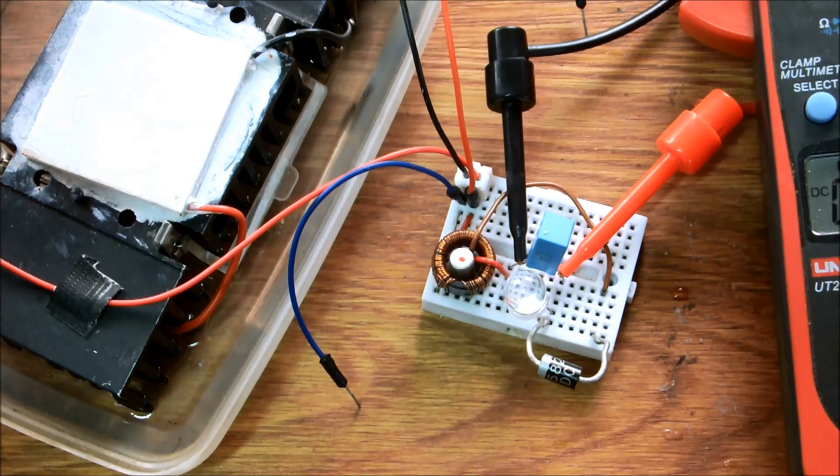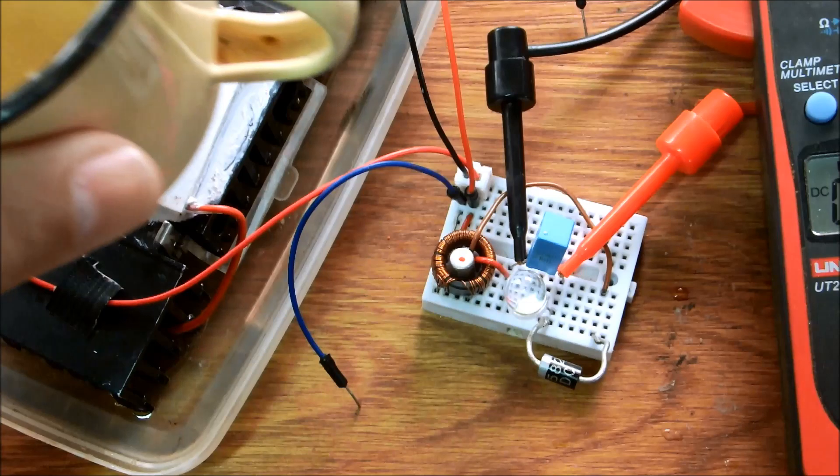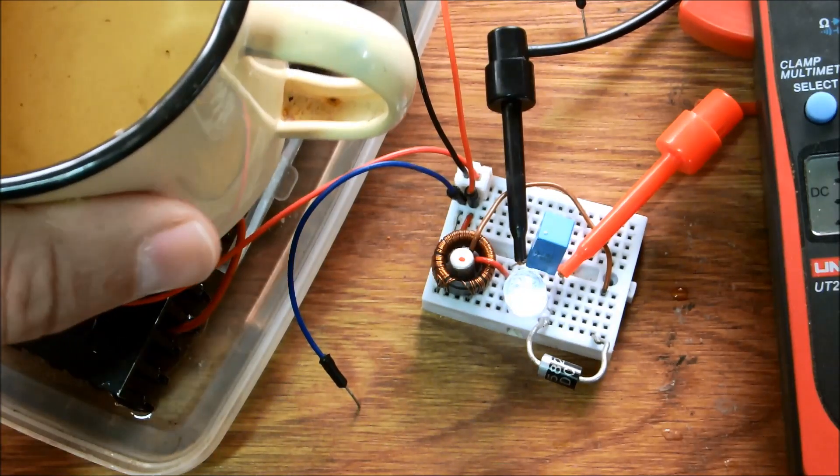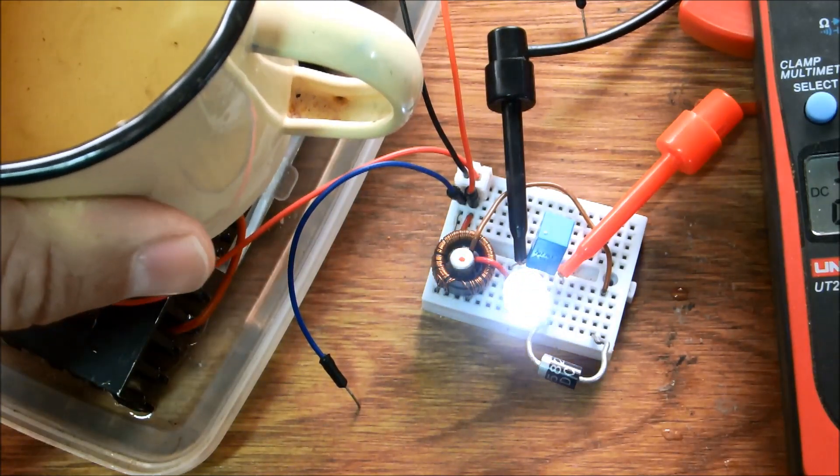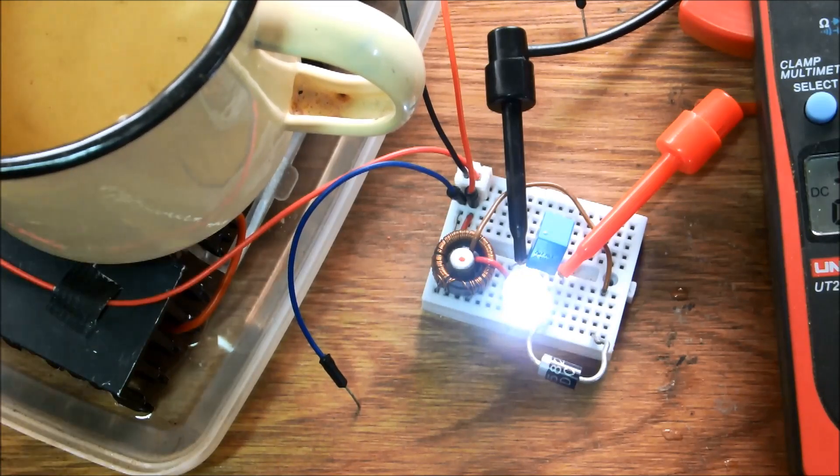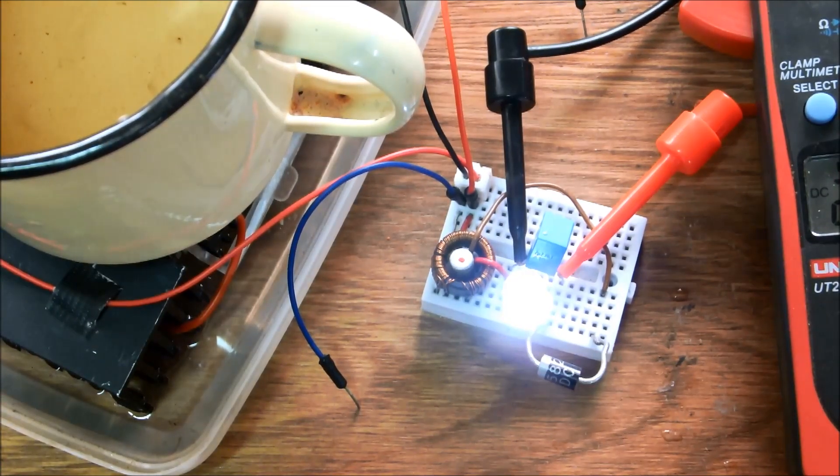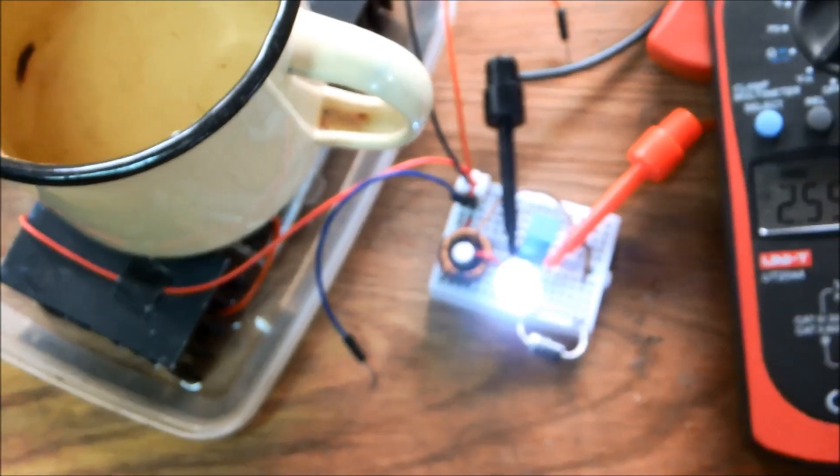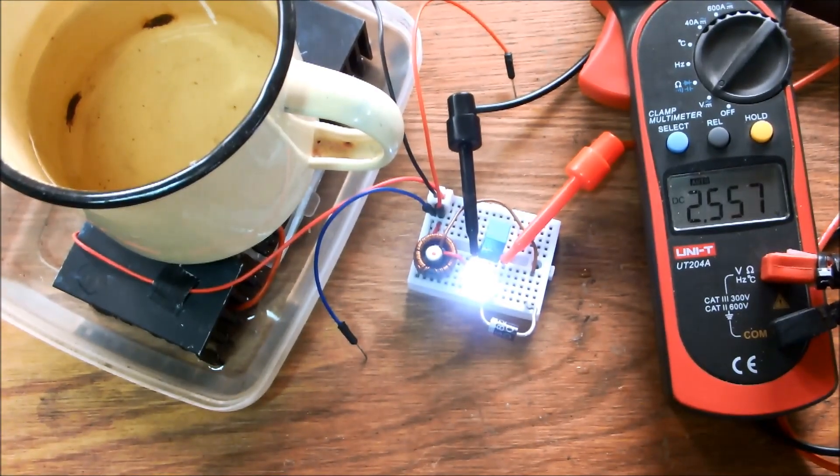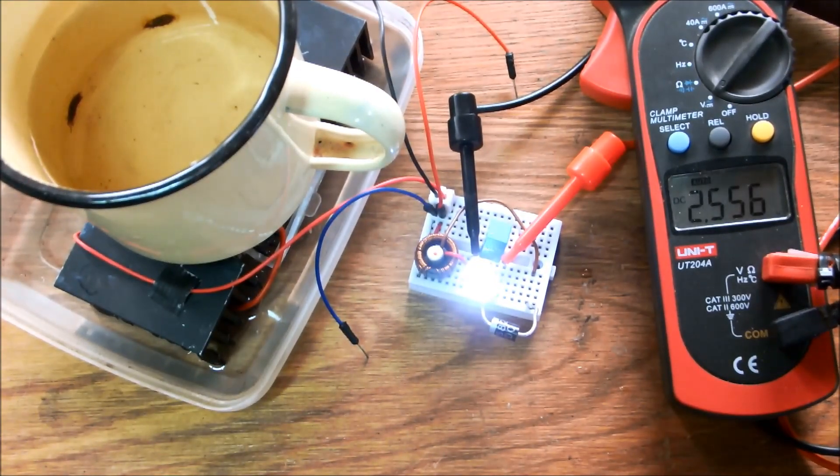My heat sink is at 23 degrees centigrade and this cup of water is at 37. So that would obviously represent body heat. And there you can see the voltage, two and a half volts across that white LED.